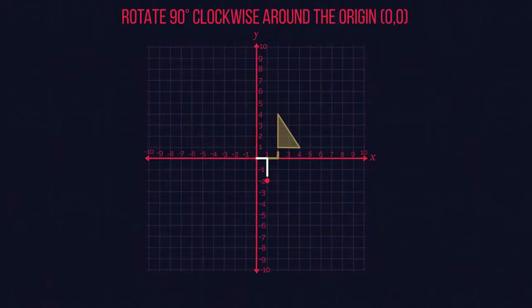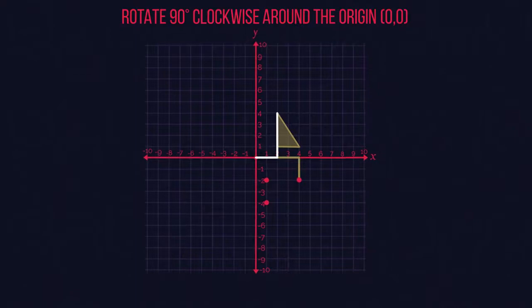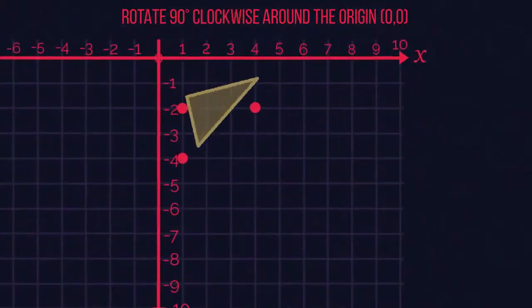And then do the same for the other two corners. So 4 along and 1 up becomes 1 along and 4 down. And 2 along and 4 up becomes 4 along and 2 down. We have our triangle, so join up the points.